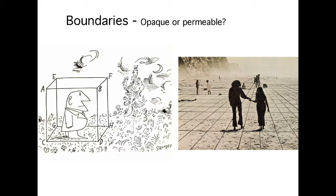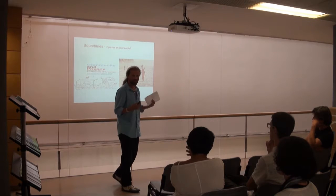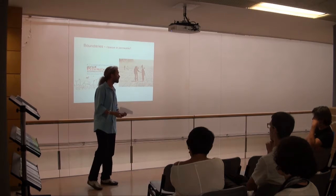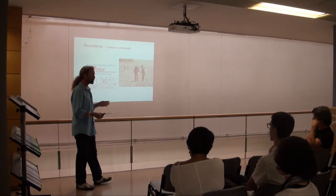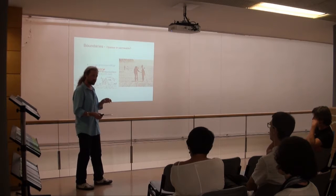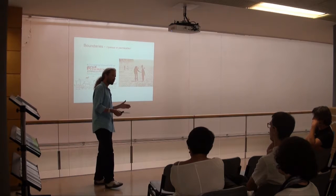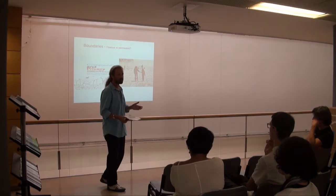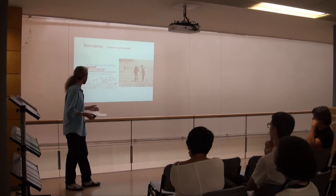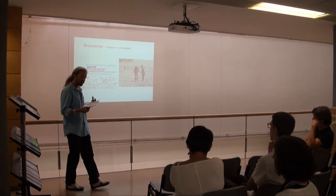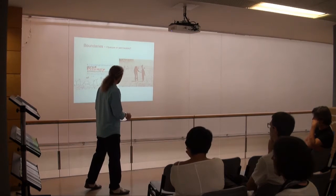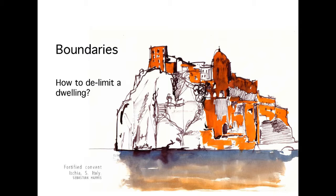This leaves us with the question: what should a boundary of a dwelling be? It's obvious we can think of front doors, walls, glass. But should a boundary to a dwelling — a place in which we dwell — should it be more opaque, or should it be more permeable? Which is better? This is a question which depends on every project, but I think it's something very significant to be thinking about as we start to design. What kind of boundaries do we need in order to make that sense of a place in which we can remain, in which we can dwell?